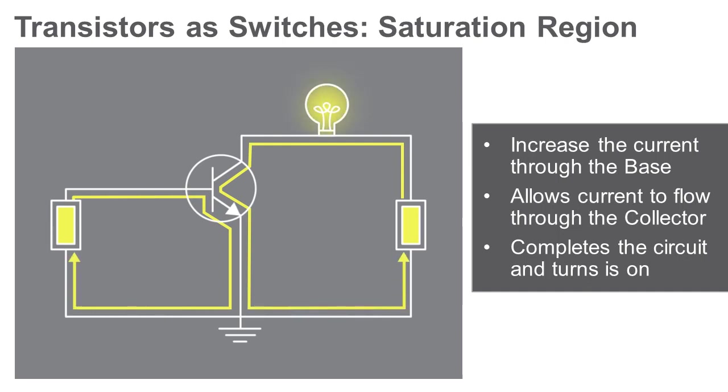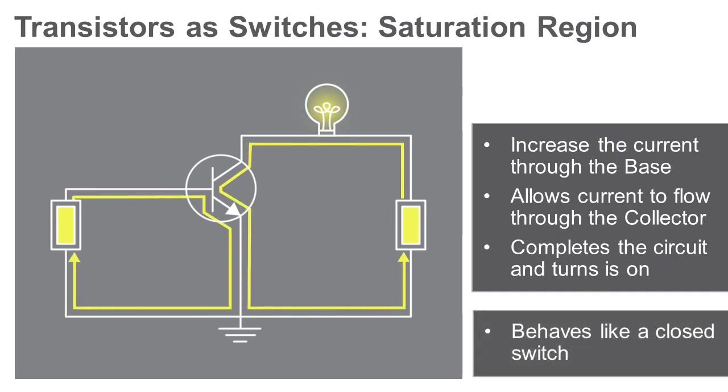When this happens, the transistor is operating in the saturation region. In the saturation region, a transistor behaves like a closed switch.